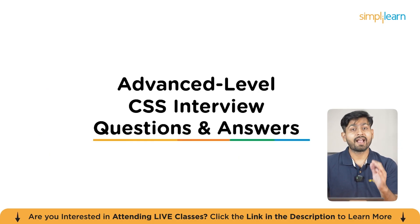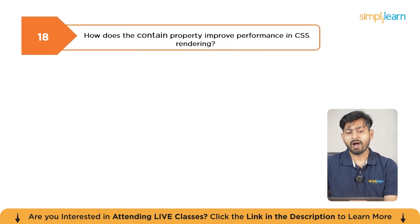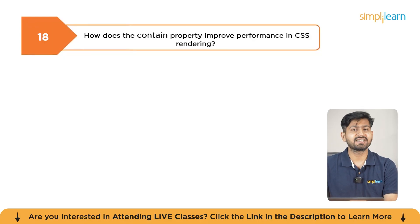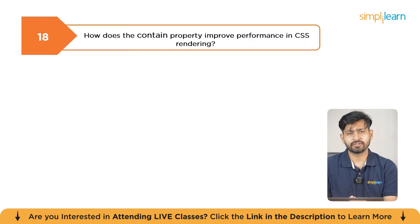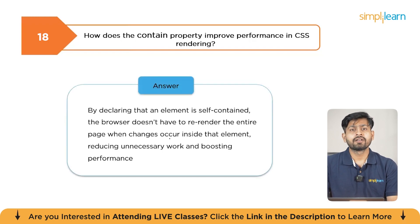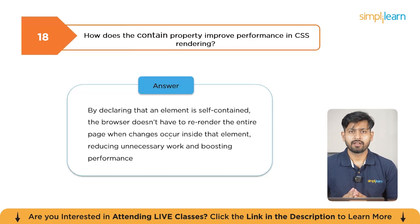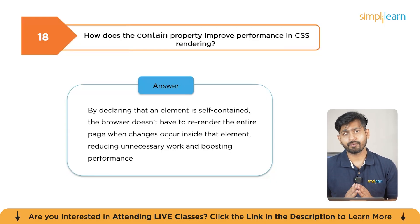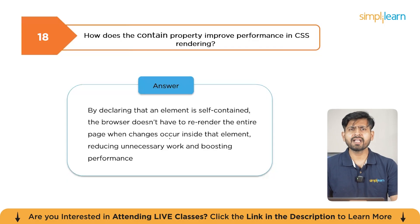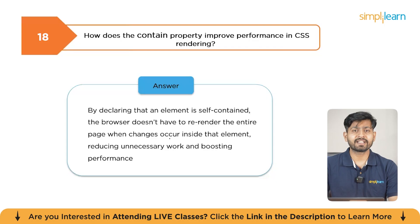Now let's discuss advanced level CSS questions. The first question is: how does the contain property improve performance in CSS rendering? The contain property tells the browser to limit the scope of rendering for an element. It improves performance by reducing unnecessary reflow and repaint operations, which is useful in large and complex layouts.